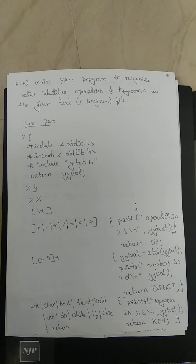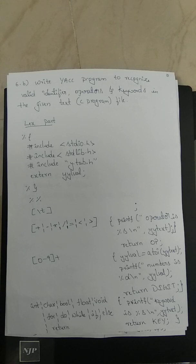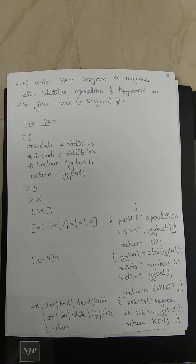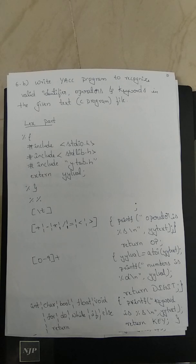We'll discuss a YACC program to recognize valid identifiers, operators, and keywords in a given text. The text may contain a C program. For this question, we write a YACC program. When we look at the question, the input is a text file containing a C program. We create a file with the C code, feed it as input to the program, and find which are the identifiers, operators, and keywords.